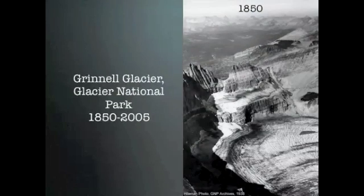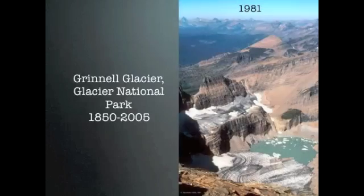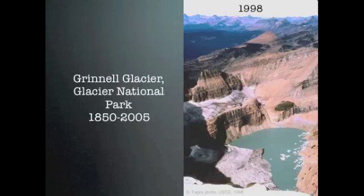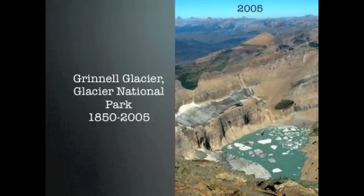Another place where the effects of global warming can be seen is in our ice cover. For example, this is a picture of the Grinnell Glacier in Glacier National Park in 1850. Here it is again in 1980, again in 1998, and finally in 2005, where it is almost gone.